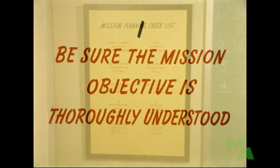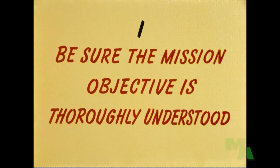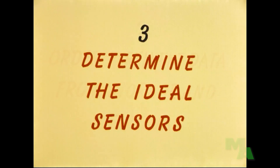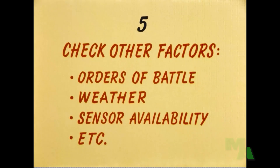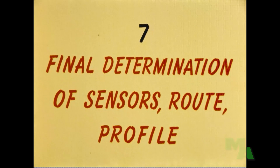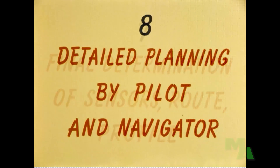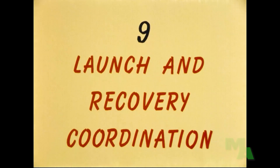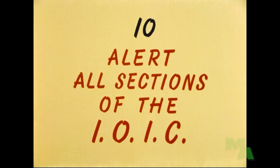To review quickly: the first principle is to be sure the mission objective is thoroughly understood. Then order all pertinent data from storage and retrieval. Determine what the ideal sensors for the mission would be. Check the distances to be flown against the range of the aircraft. Check other factors such as orders of battle, the weather, and the availability of sensors. Plan penetration and retirement over known points. Make a final determination of sensors, route, and profile. Brief the pilots and navigators so they can do their detailed planning. Coordinate launch and recovery with the operations and air departments. Alert all sections of the IOIC on details that concern them.